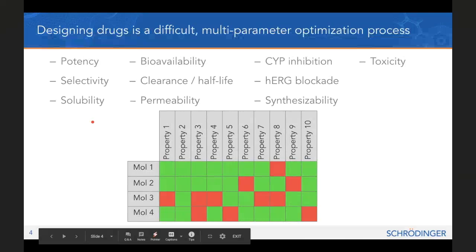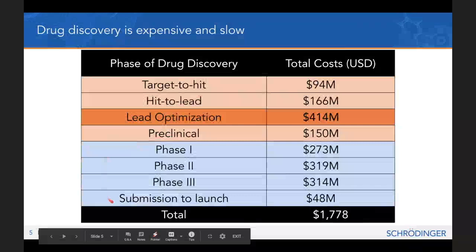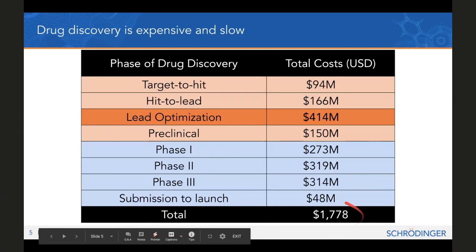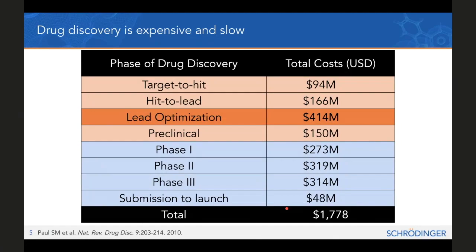You end up with this iterative process where you're trying to design through different types of properties that you need to have all checked off in one molecule, and this takes a lot of money. We often hear about how the clinical phase portion of drug discovery is quite expensive, and that is true. But in terms of annualized expense, the lead optimization process is typically the most expensive.